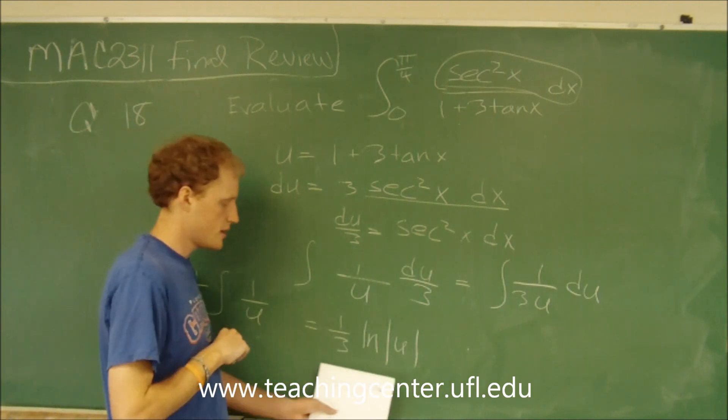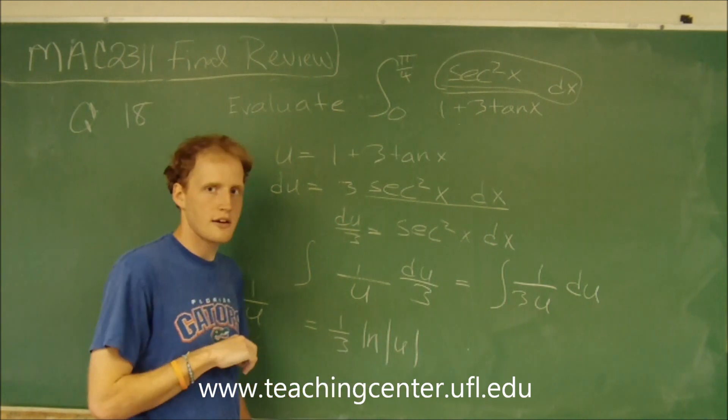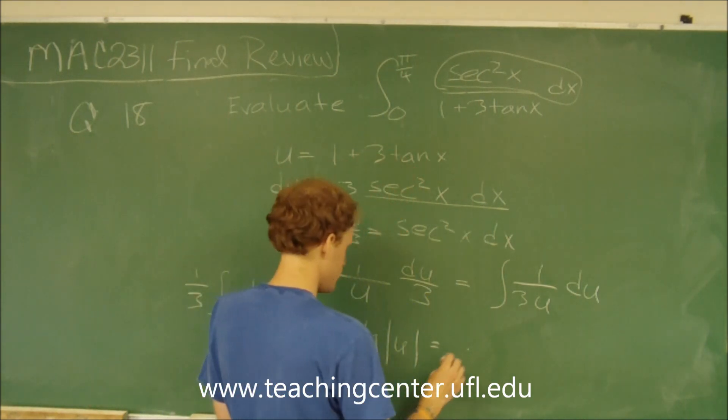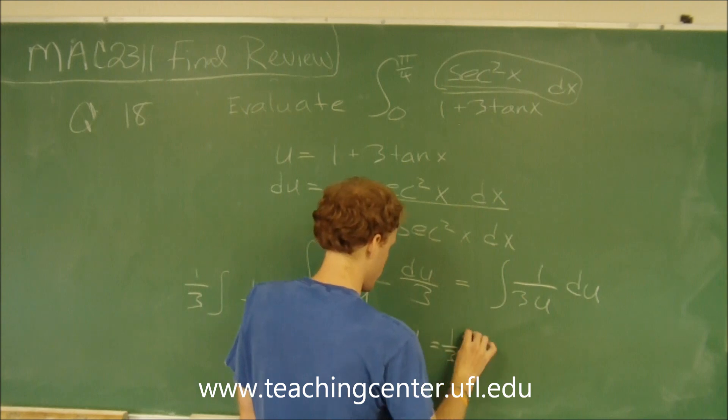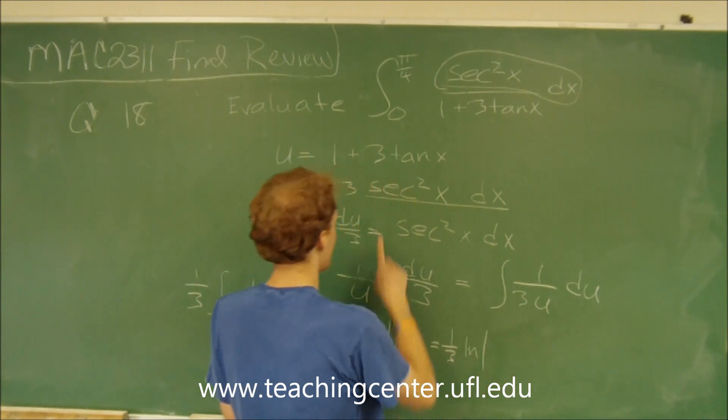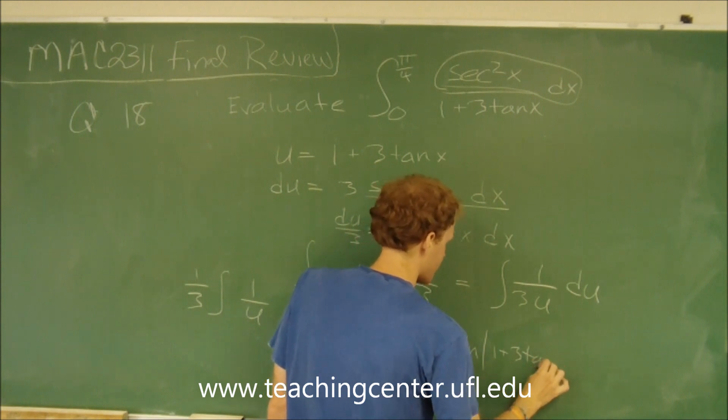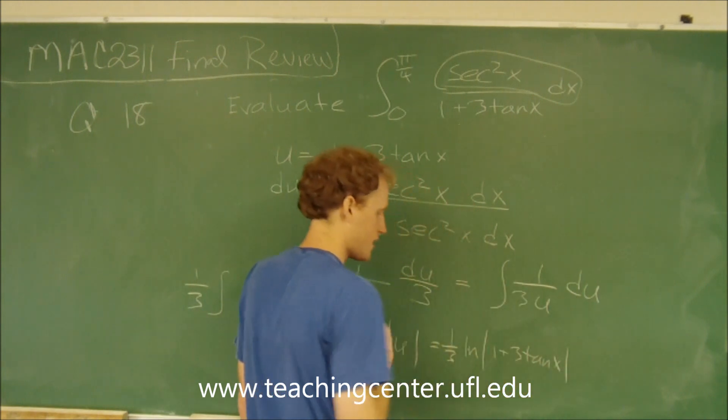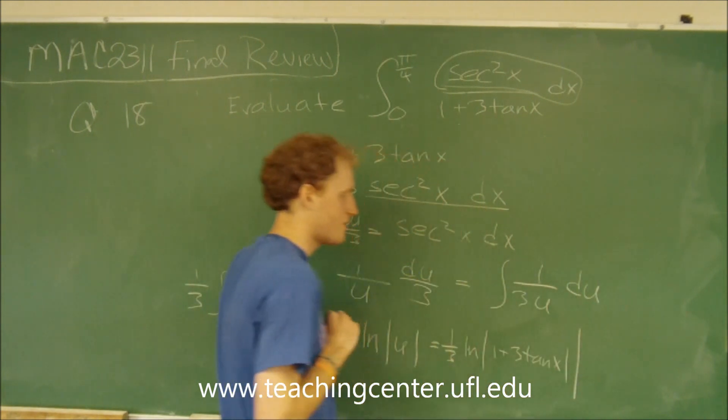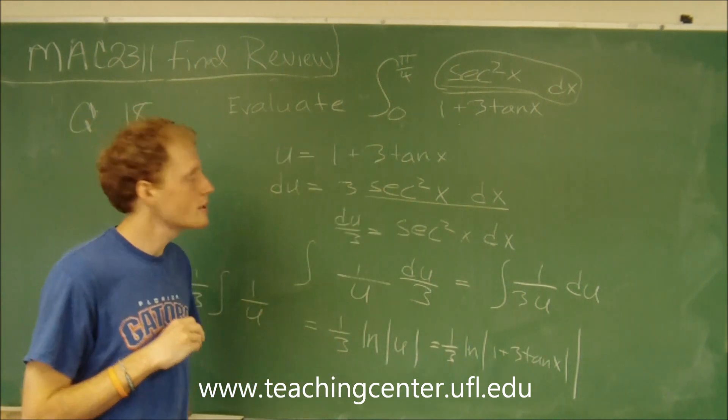So now let's go ahead and replace our u in. So it would equal 1 third natural log of 1 plus 3 tangent x. Then we can evaluate it from 0 to pi over 4.